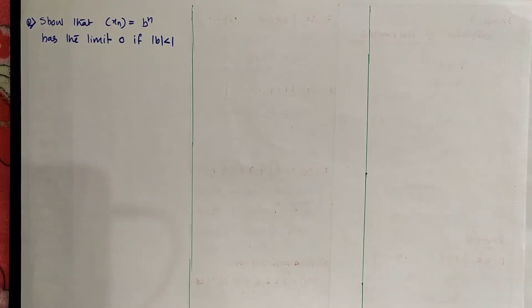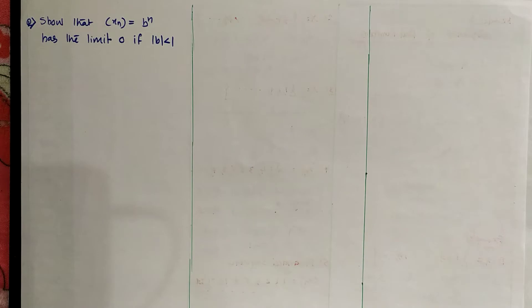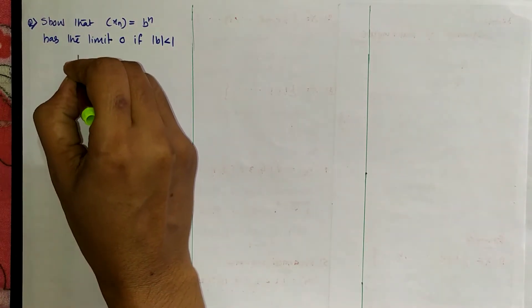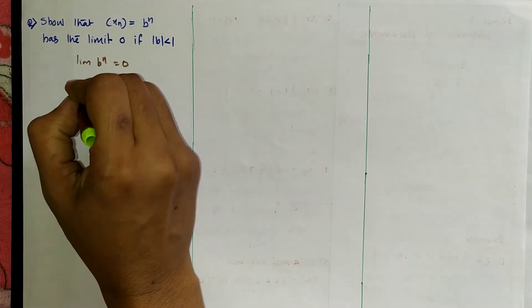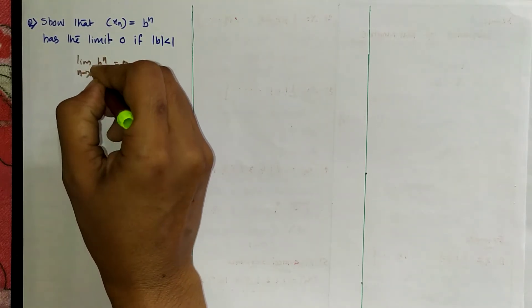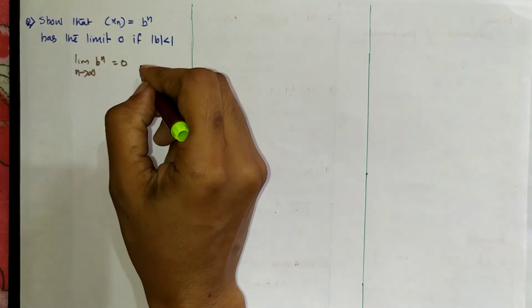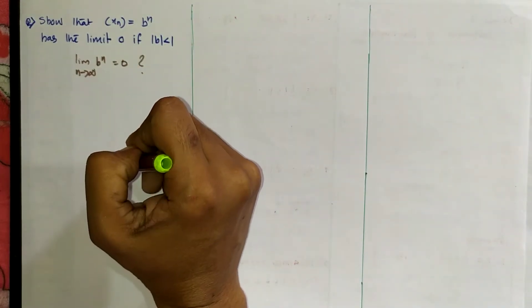Good morning. In this video, we discuss a problem. Show that the sequence xn equal to b raised to n has the limit 0 if mod b less than 1. We need to prove that as limit n tends to infinity, b raised to n equals 0.